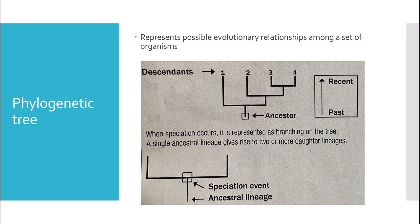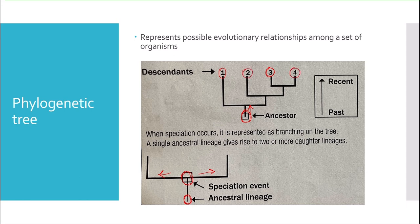The last thing to look at is a phylogenetic tree. A phylogenetic tree represents possible evolutionary relationships among a set of organisms. Moving along the arrows shows movement to more recent times. When speciation occurs it is represented as branching, where a single ancestral lineage gives rise to two or more daughter lineages. For example, organism three is more closely related to two than to one, and four is more closely related to three than to two, but they all share a common ancestor.